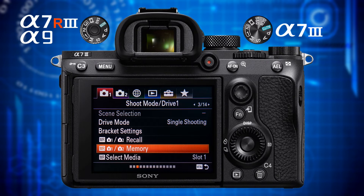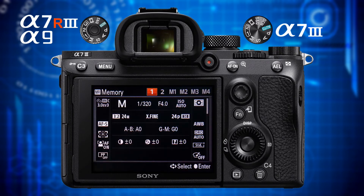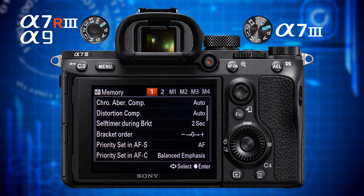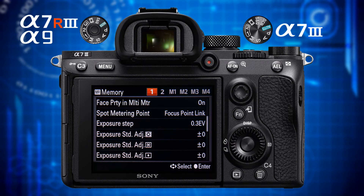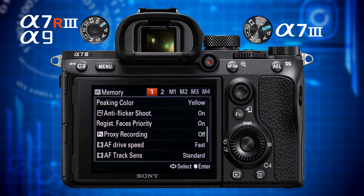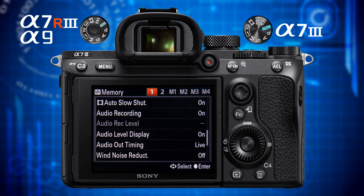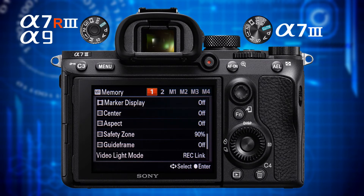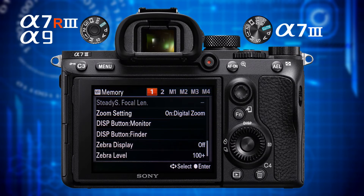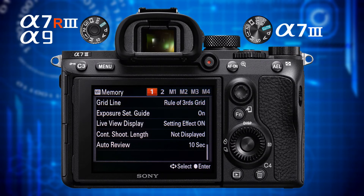The next item is MR Camera 1 / Camera 2 Memory. It allows you to store all settings in the Camera 1 and Camera 2 menu items to 6 memory positions for the A7 III, and 7 for the A7R III and A9. You can do so in any mode. Just open this function, choose the memory position you want and confirm by pressing the center button. To instantly recall a stored setting, use the MR Camera 1 / Camera 2 Recall function and choose the respective memory position.